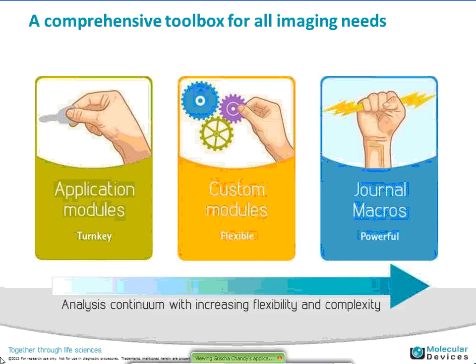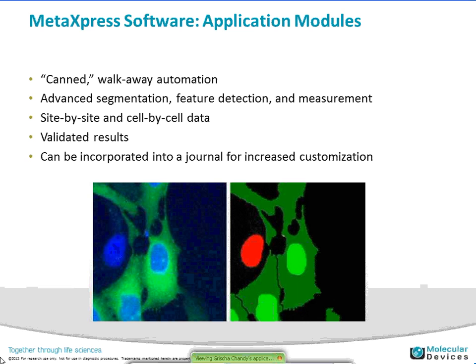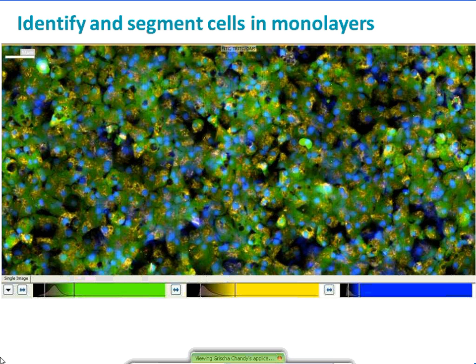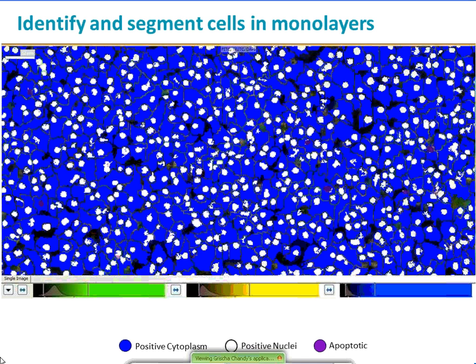A MetaExpress software application module provides sort of walk-away automation, gives you some advanced segmentation, side-by-side data view, and it can be incorporated into a journal for customization. Some of the core capabilities include the ability to segment cells, even when they are in complete monolayers. Here's an overlay and here's the ability to segment that into cytoplasm, nuclei, and membrane. You'll see some of this as a fundamental capability that drives some of the assays that Allison is going to talk about.